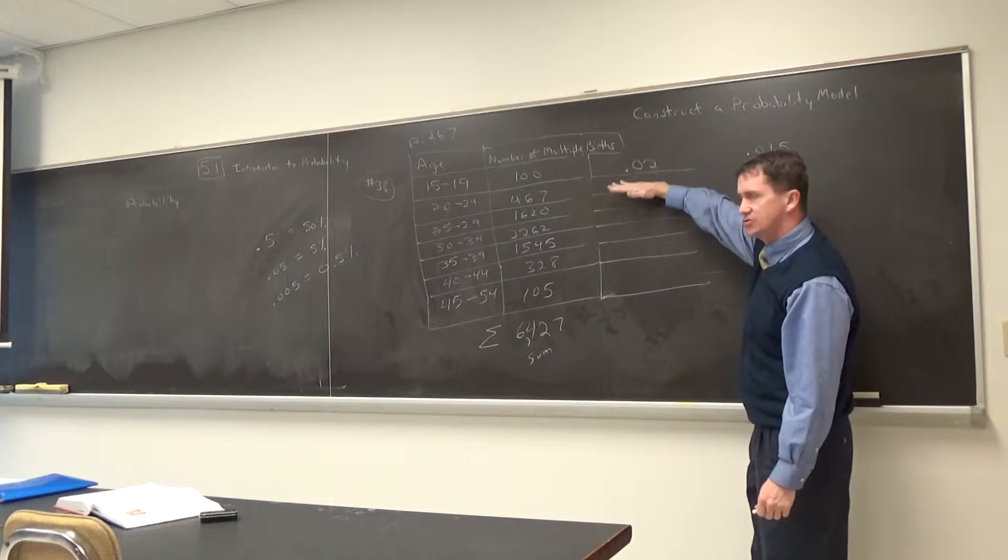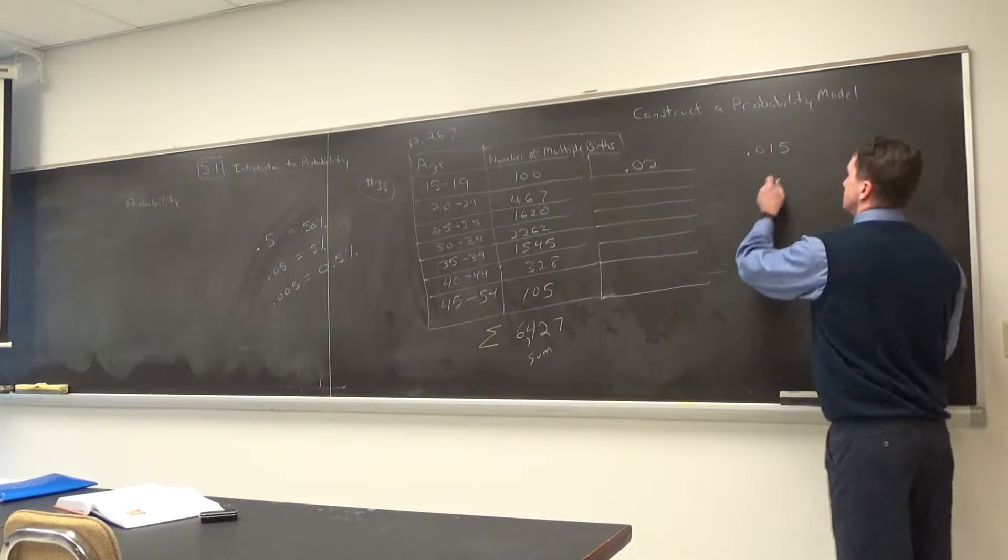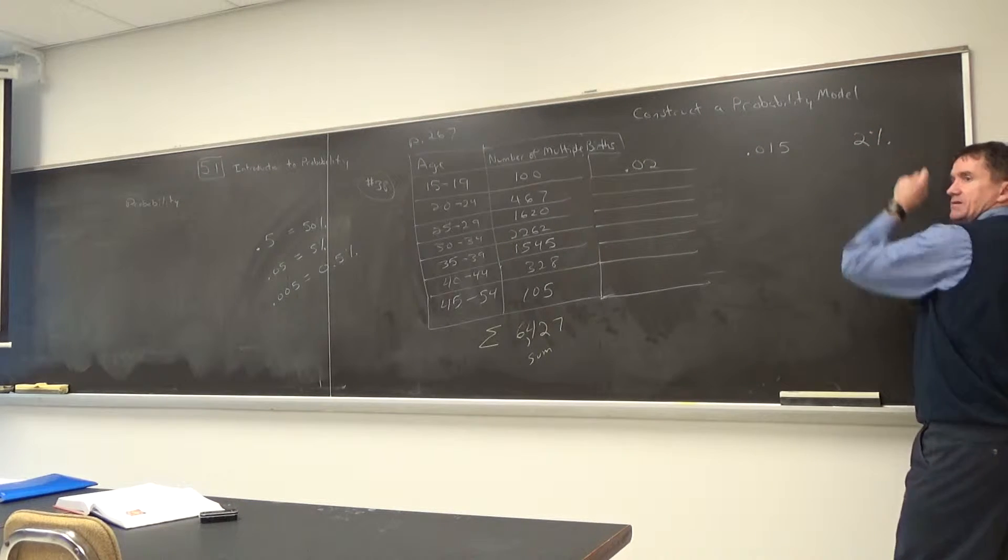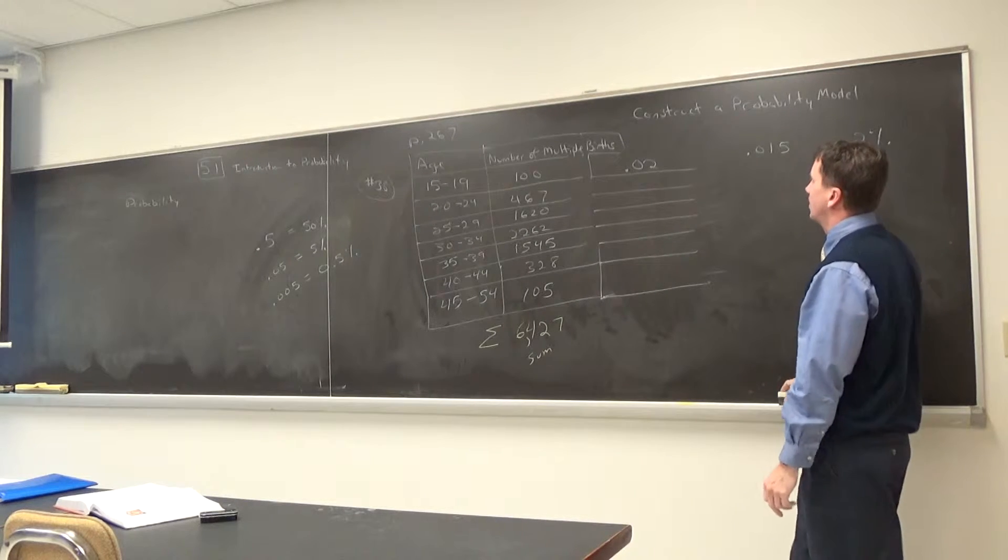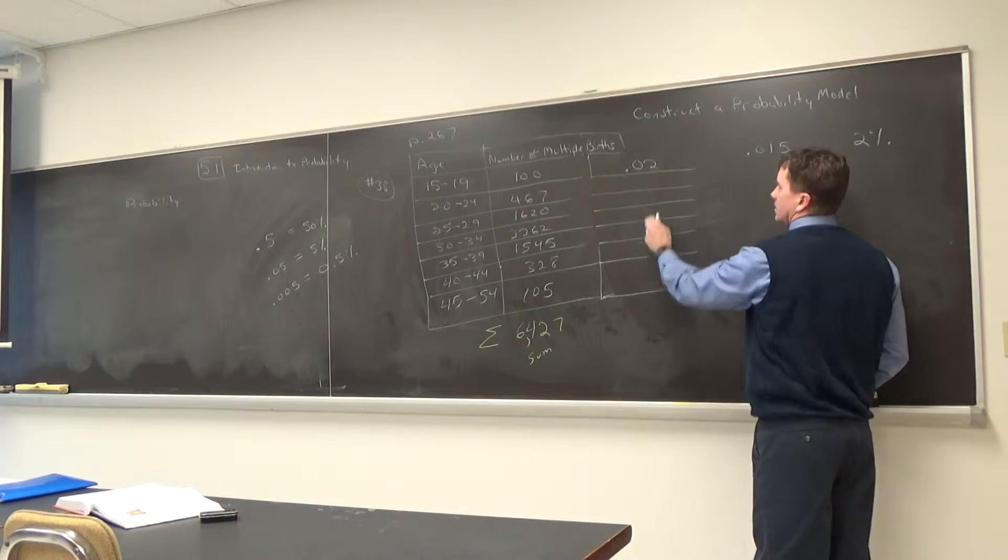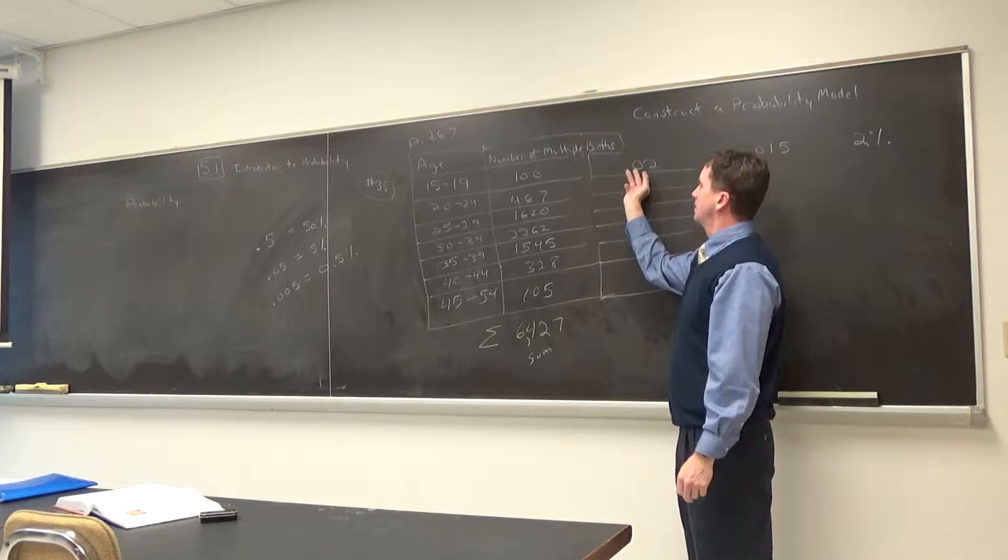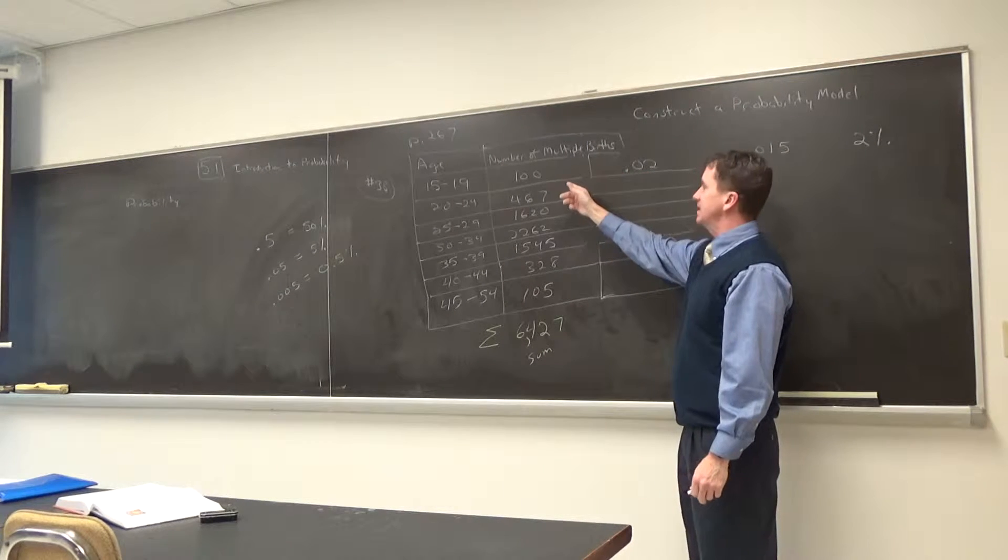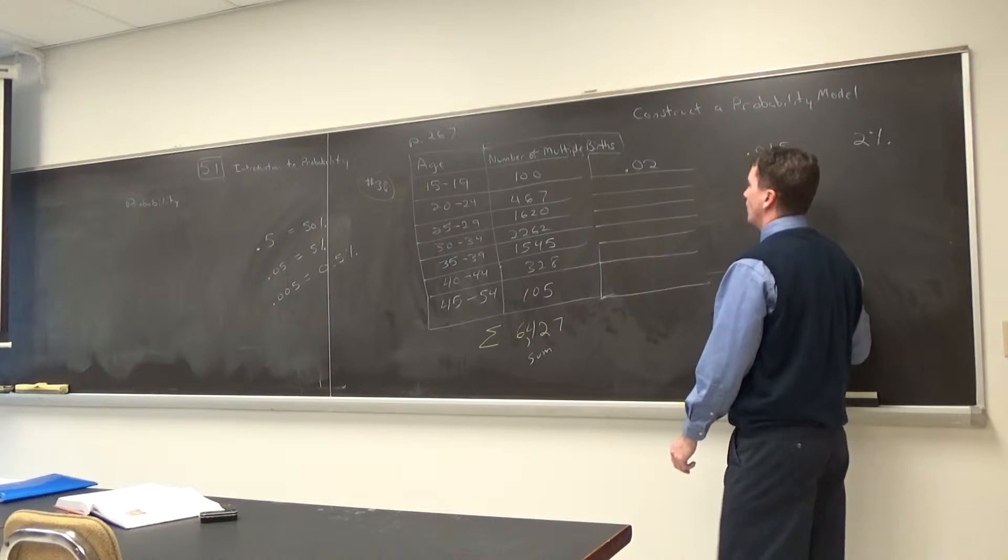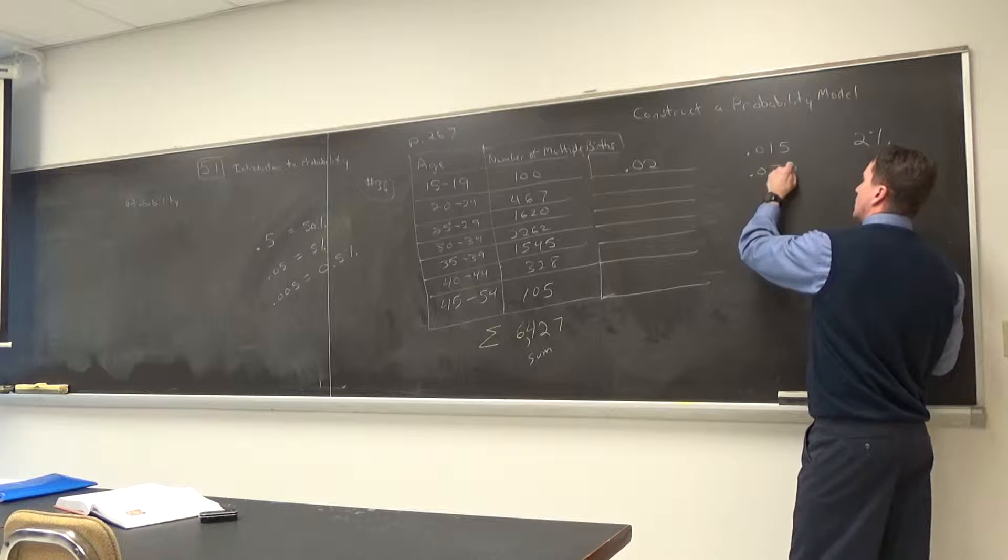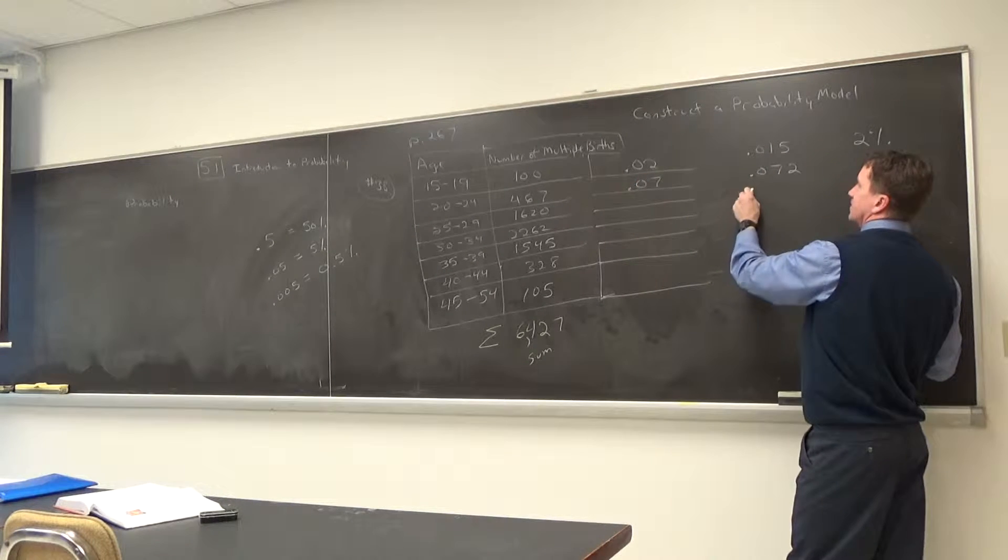I just thought for our class demonstration, we'll do all these in two decimal places. Now some of you might write that as 2%, some may prefer to write it that way. I'll write all these in decimal form. So 2% of ages 15 to 19 had multiple births. How about this one? 0.072. I'll make that 0.07.